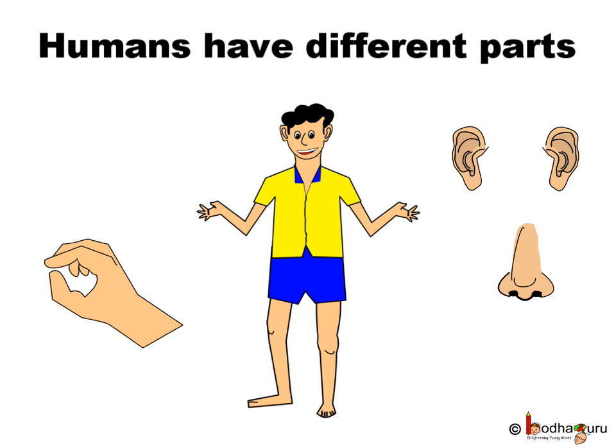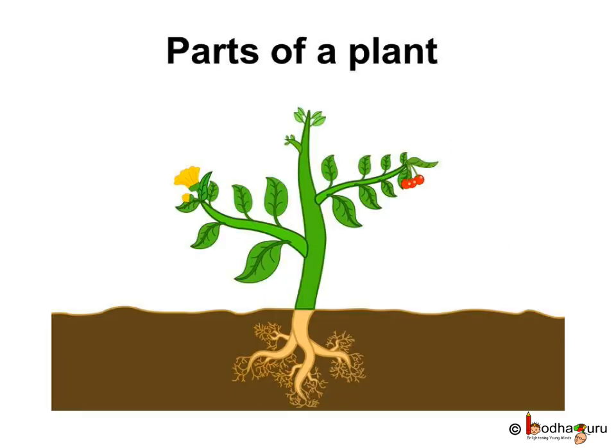Like we humans have different parts in our body like hands, legs, nose, ear, etc., they all are important for us as each part performs a different role. Same way, plants also have many parts. Each part performs different tasks and is very important for the plants.